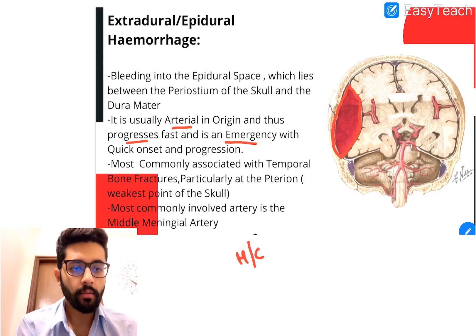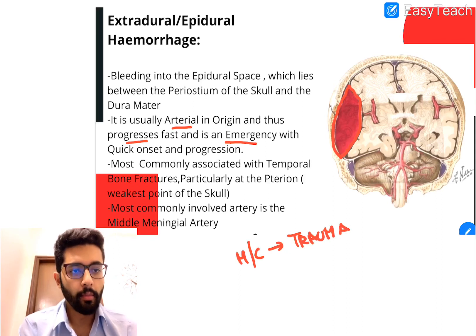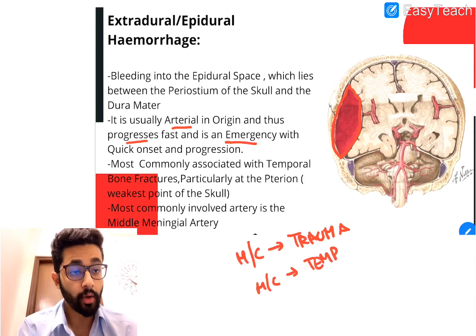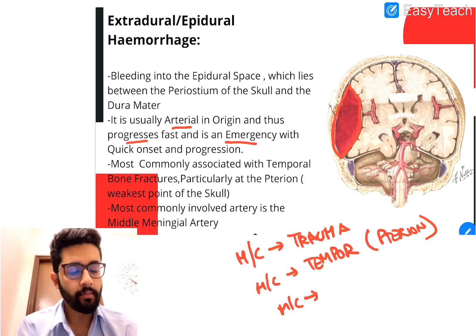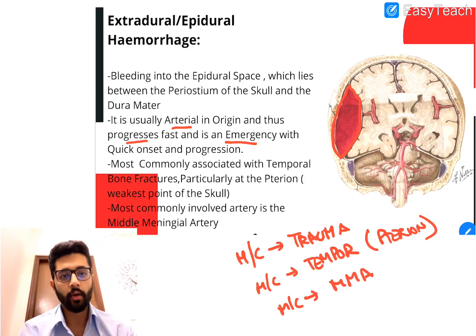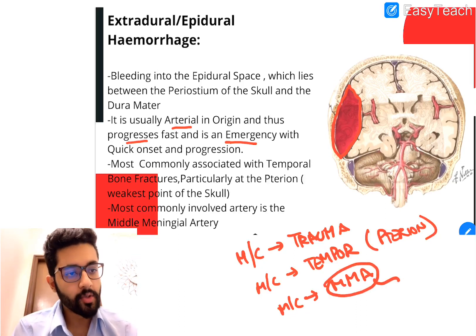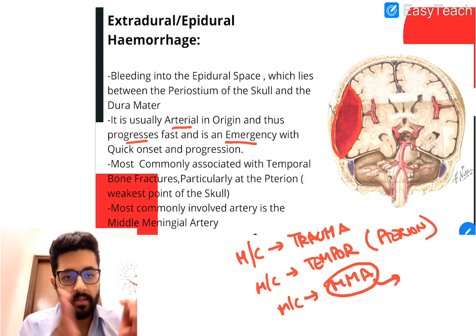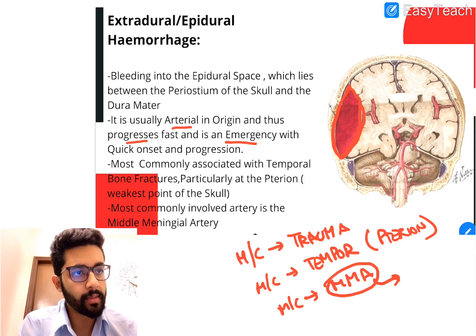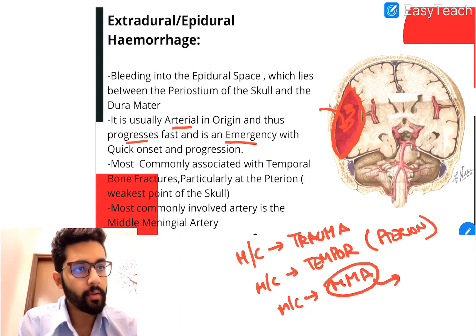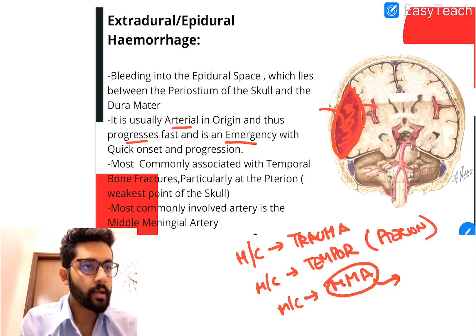A few important points to remember about EDH: the most common cause is trauma. The most common bone fracture associated with EDH is temporal bone fracture, especially at a site called the pterion. The most common vessel involved is the middle meningeal artery. Rupture of this artery leads to bleeding into the epidural space, and blood starts collecting there, compressing the brain tissue and potentially causing herniation.